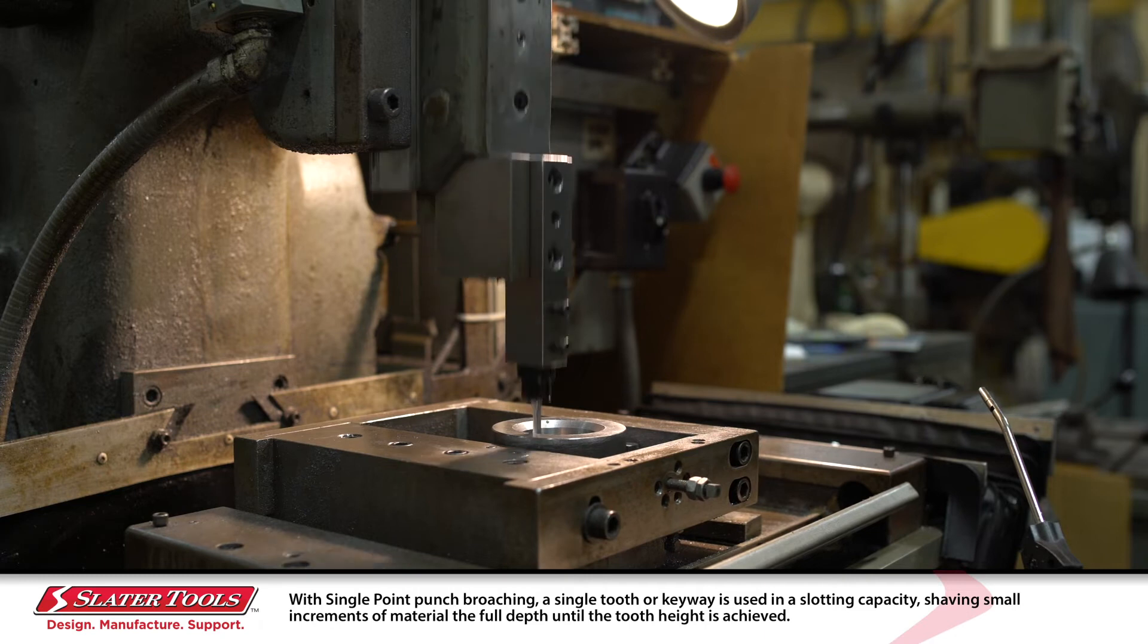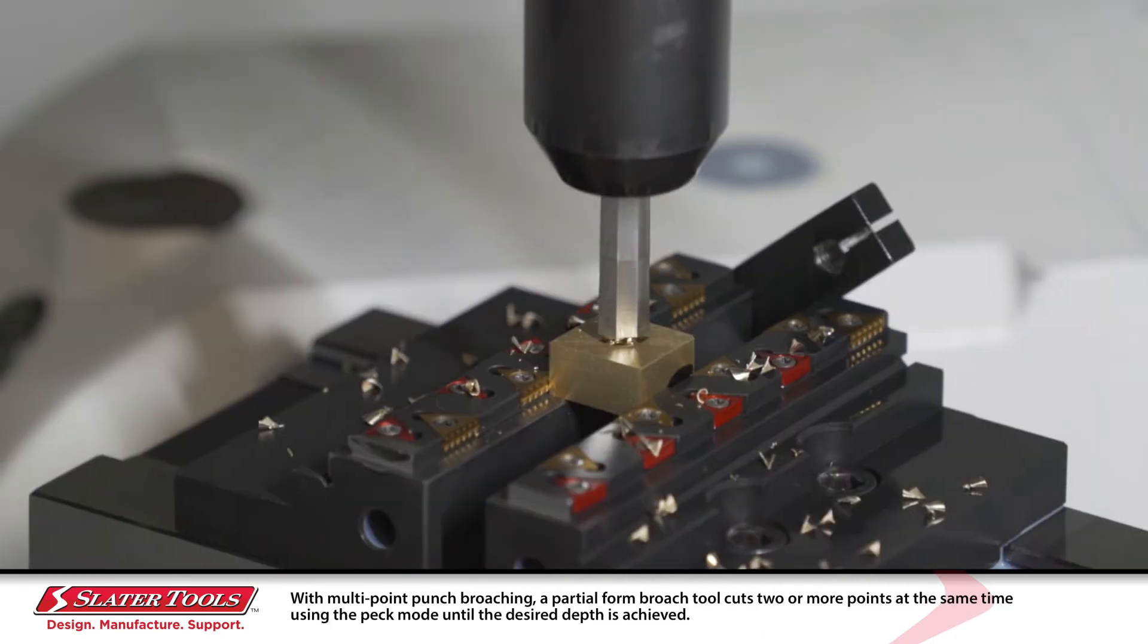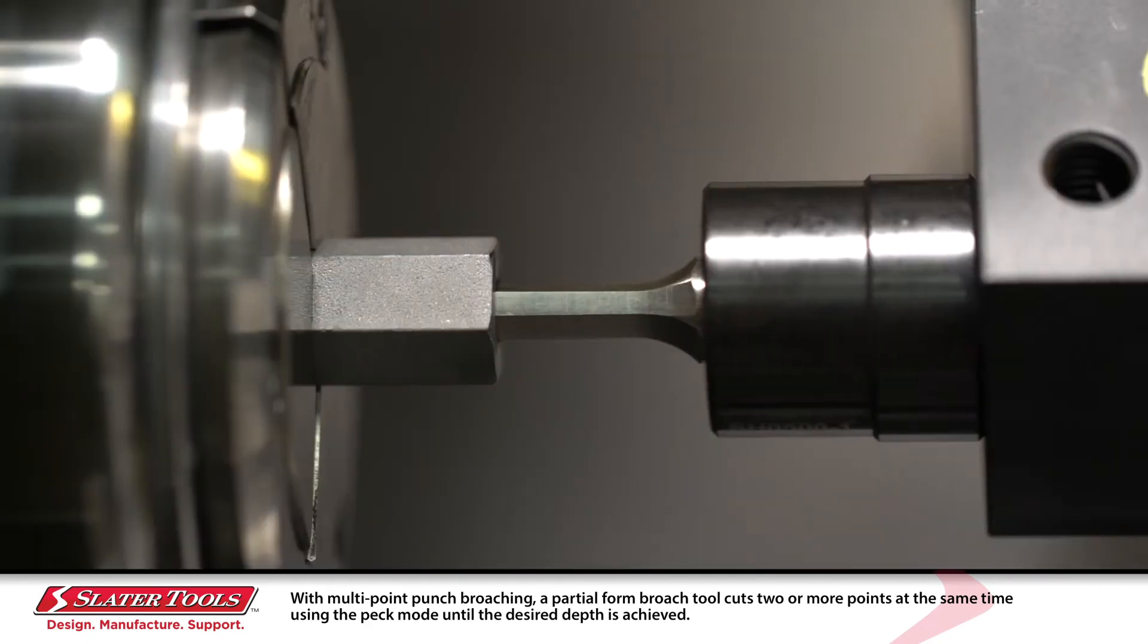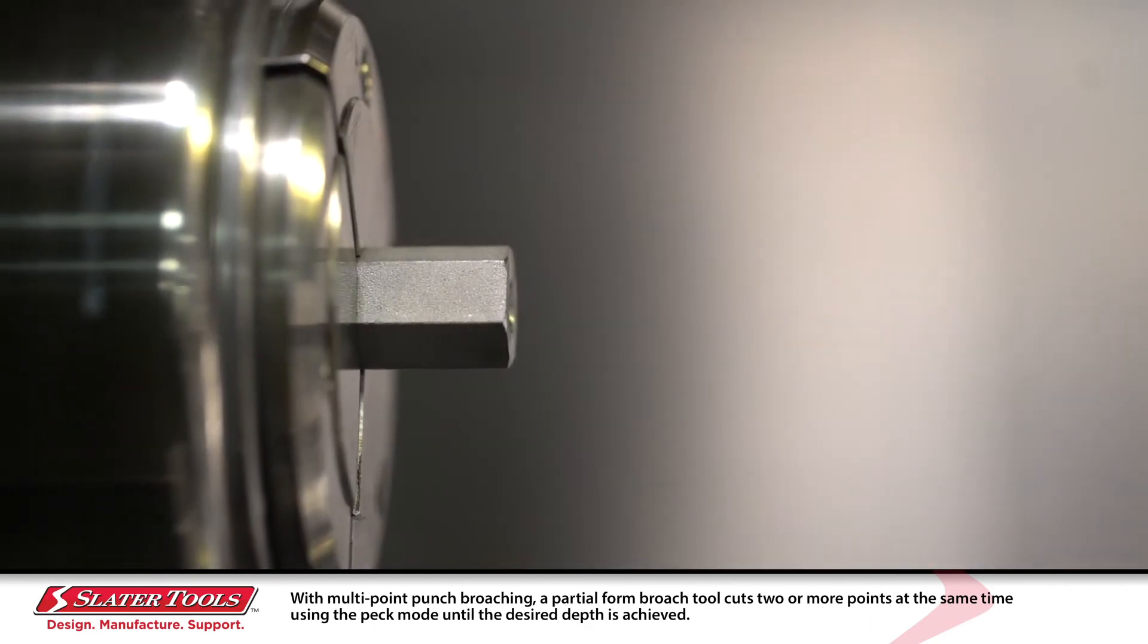With multi-point punch broaching, a partial form broach tool cuts two or more points at the same time using the pec mode until the desired depth is achieved.